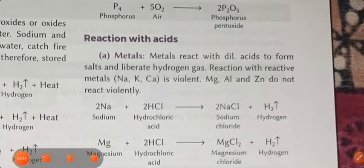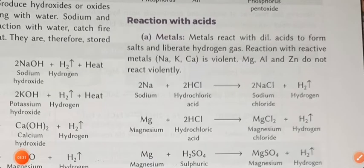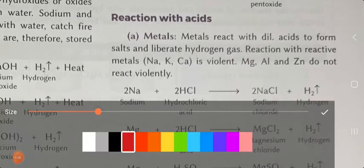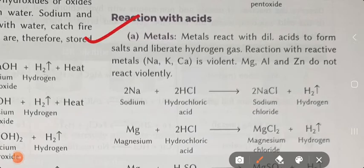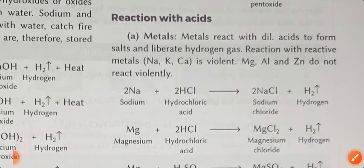Now our new topic today is reaction with acid. Let's see when metals react with acid, what do they form? Metals react with dilute acid to form salt and liberate hydrogen gas. Reaction with reactive metals like sodium, potassium, calcium is violent. Magnesium, aluminium and zinc do not react violently. So some metals react violently and some do not.